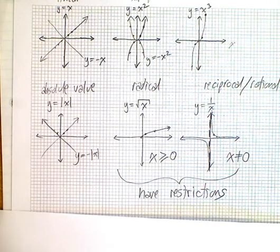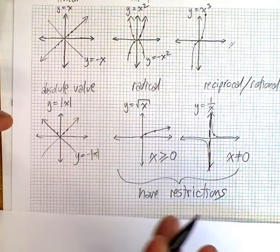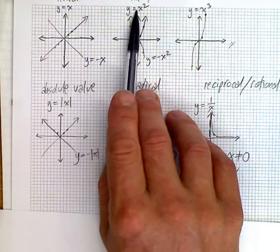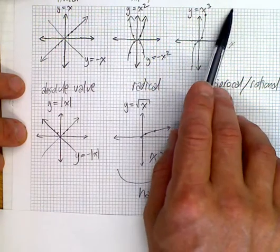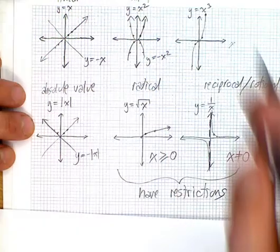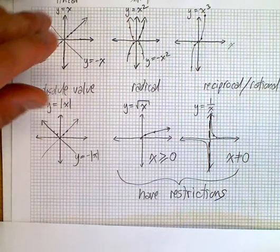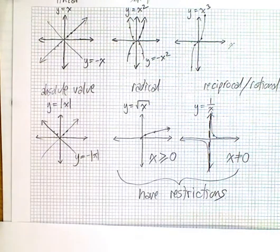These are six functions that you need to have a good grasp of. You need to know what these basic functions look like before you change them, before you add, subtract, before you put a 2 in front, or add a number at the back, or go x minus 2 squared. You have to understand these functions, these six ones.